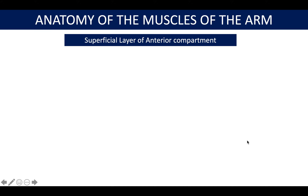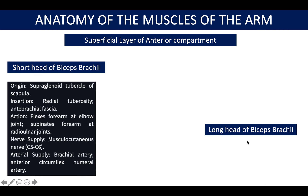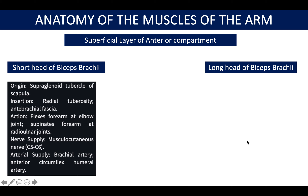We're looking at the superficial layer of the anterior compartment, consisting of the short head of biceps brachii as well as the long head of biceps brachii. The short head originates from the supraglenoid tubercle of the scapula and inserts into the radial tuberosity. The main action is flexion of the elbow. Nerve supply includes the musculocutaneous nerve, and the brachial artery and anterior circumflex humeral artery supply the muscle.